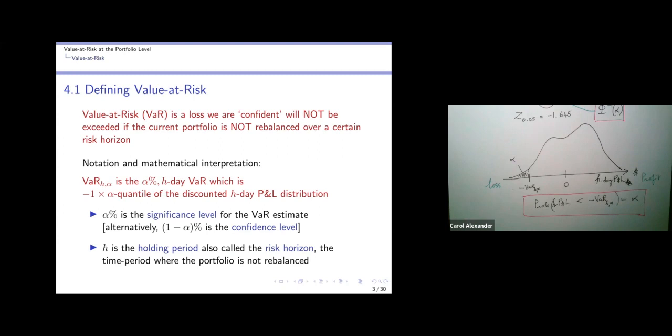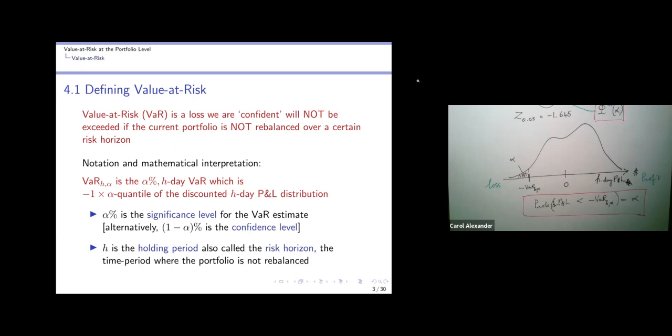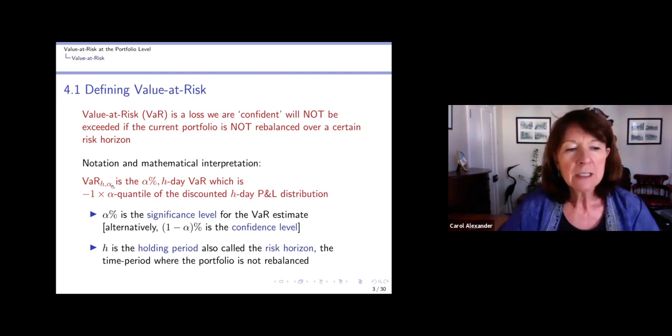Although this really is never something that we go into in any precise detail, if we were to do a one-year future P&L, we have to take into account the fact that things could inflate a lot over the next year. So maybe we should express any future prices in present value terms before we calculate the P&L. And it only really matters if h is very large to do the discounted h-day P&L distribution, but I've put it there just to be precise.